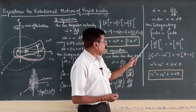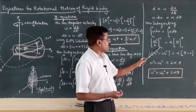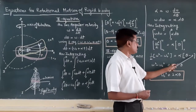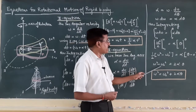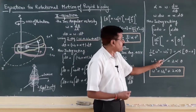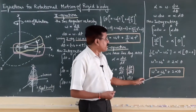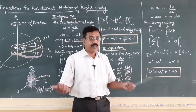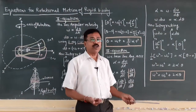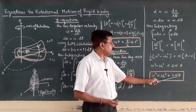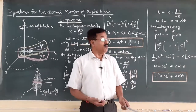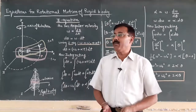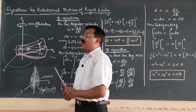Applying the limits: one-half times (omega-squared minus omega-zero-squared) on the left equals alpha times (theta minus 0) on the right. Simplifying, omega-squared minus omega-zero-squared equals 2 alpha theta, giving omega-squared equals omega-zero-squared plus 2 alpha theta. This is the third equation of motion for rotation, and it clearly resembles the linear motion equation V-squared equals U-squared plus 2As. We now have all three equations of motion for an object rotating about any axis.